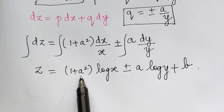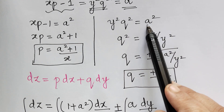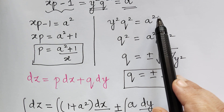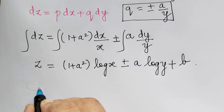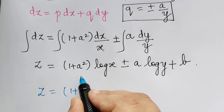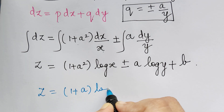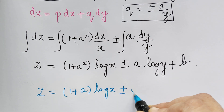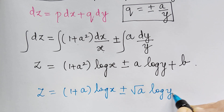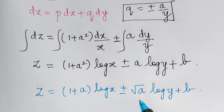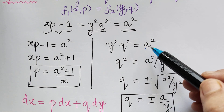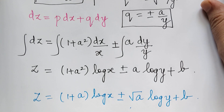If you have used a instead of a squared, then your answer would have been z equal to a times log x plus or minus square root of a times log y plus b. You can very well try that and verify whether your answer is correct.